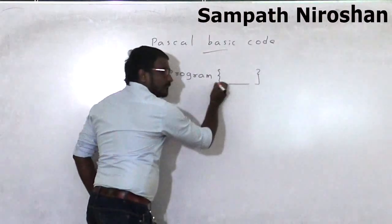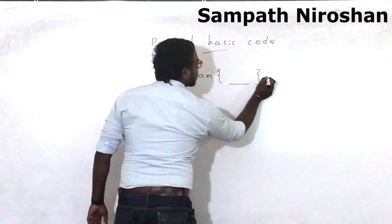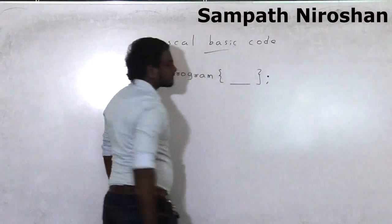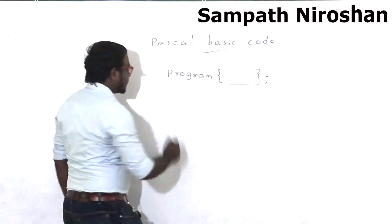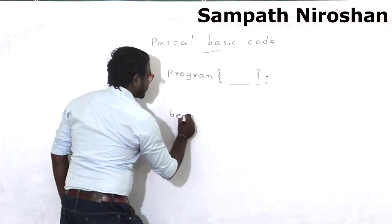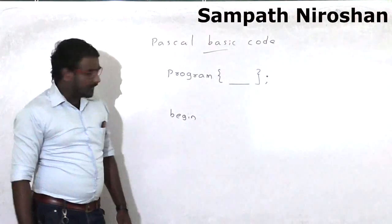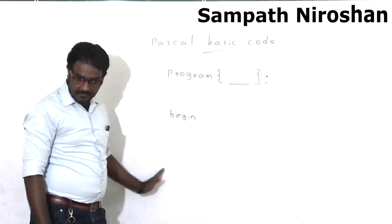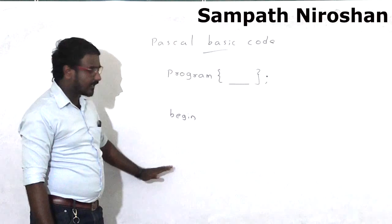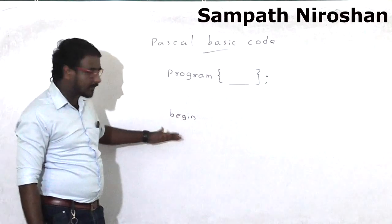To end any code you are using the semicolon—that's the first code. Second code you need is 'begin'. Begin means you are starting a method, you are starting a function. After begin, whatever the instruction is you need to get done with the computer should be declared, should be coded.